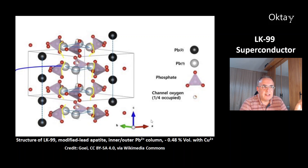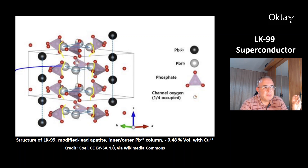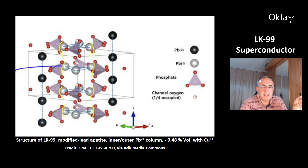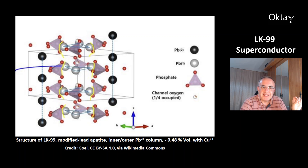This is the structure of LK99 — a modified lead-apatite. The modification comes from the copper ions, which are essential. There are two columns of lead ions: an outer column in black and an inner column in grey. Between these columns are the phosphate ions. By replacing some of the lead ions with copper ions, you get a volume reduction of just 0.48%, and that gives this material its superconducting properties.